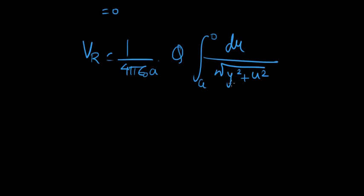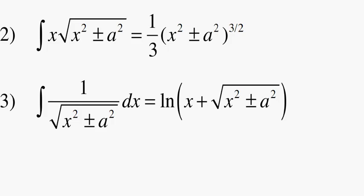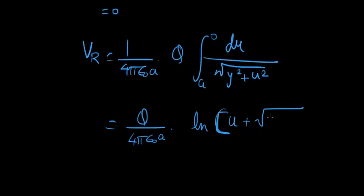Here, y squared is A squared, mind you, because we're integrating with respect to du and not dy. So here we get q over 4 pi epsilon naught A times natural log of u plus root of u squared plus y squared. Again, as these integrals go from A to 0.